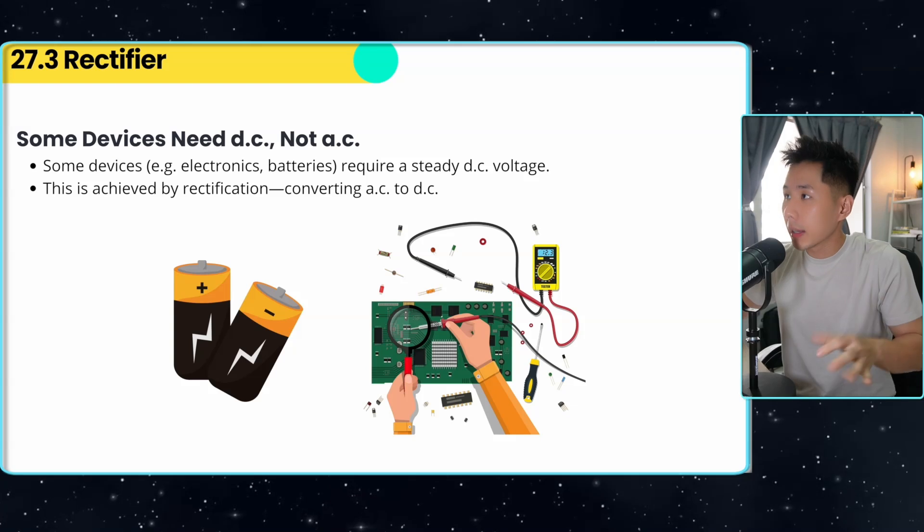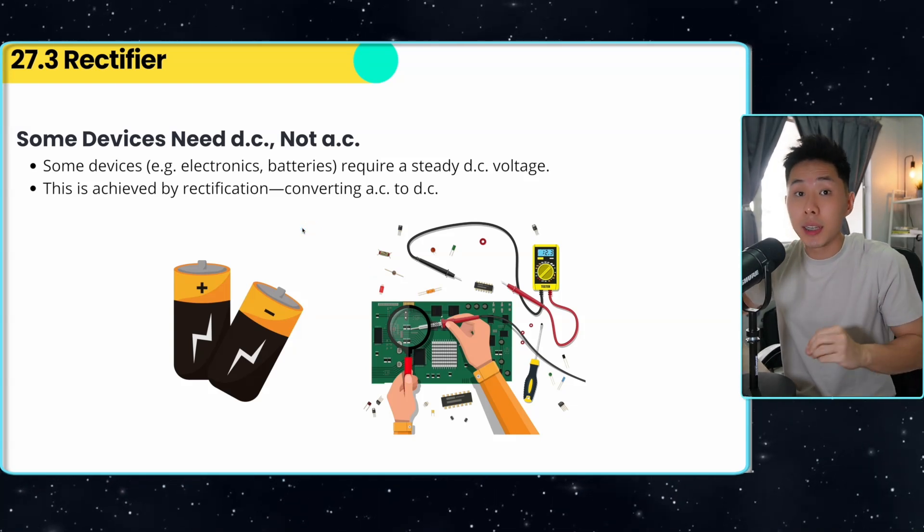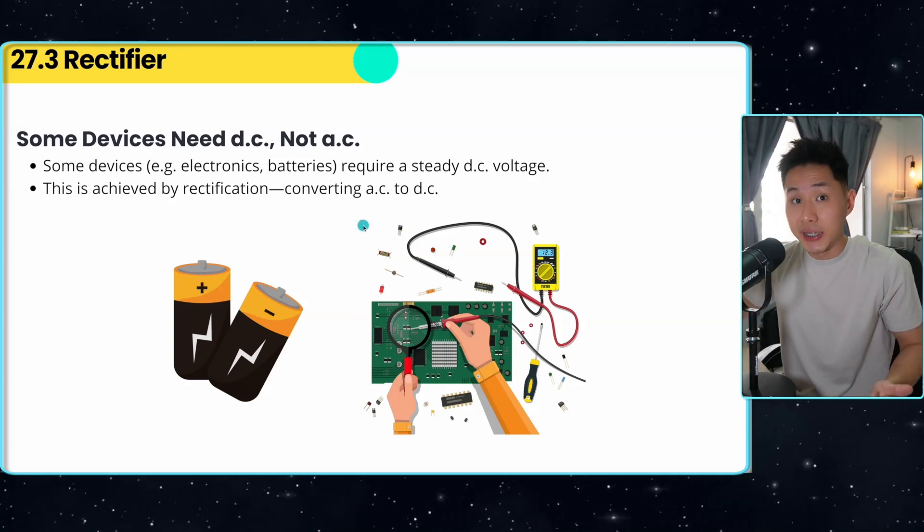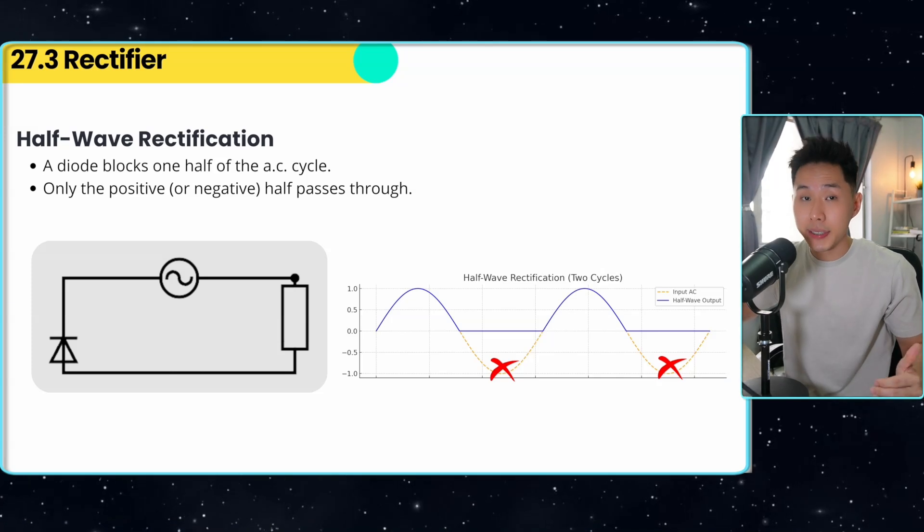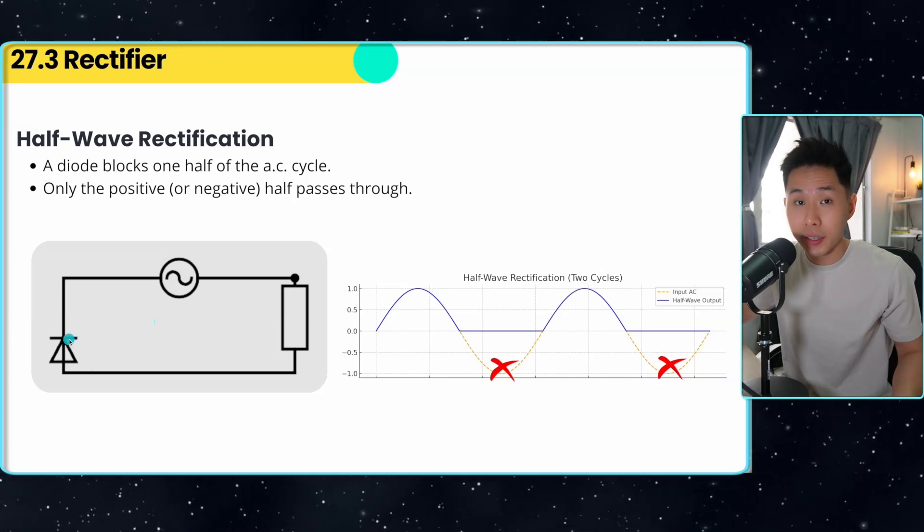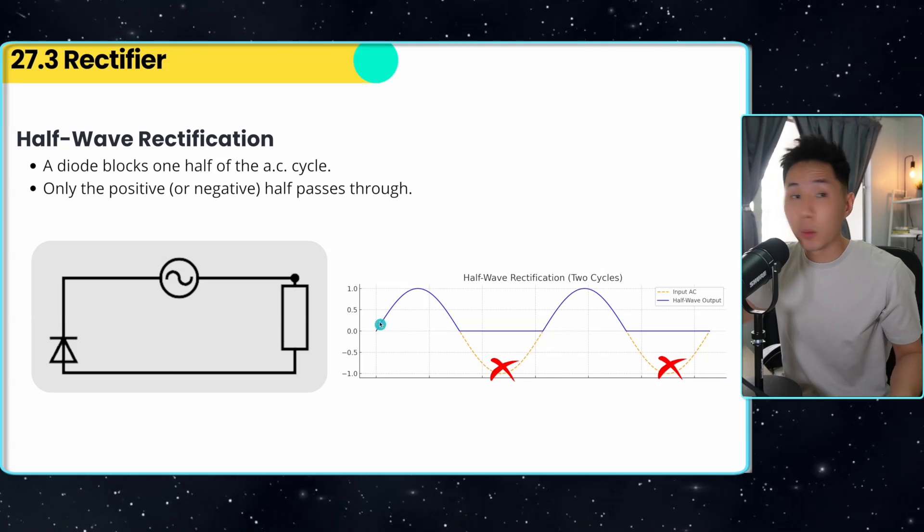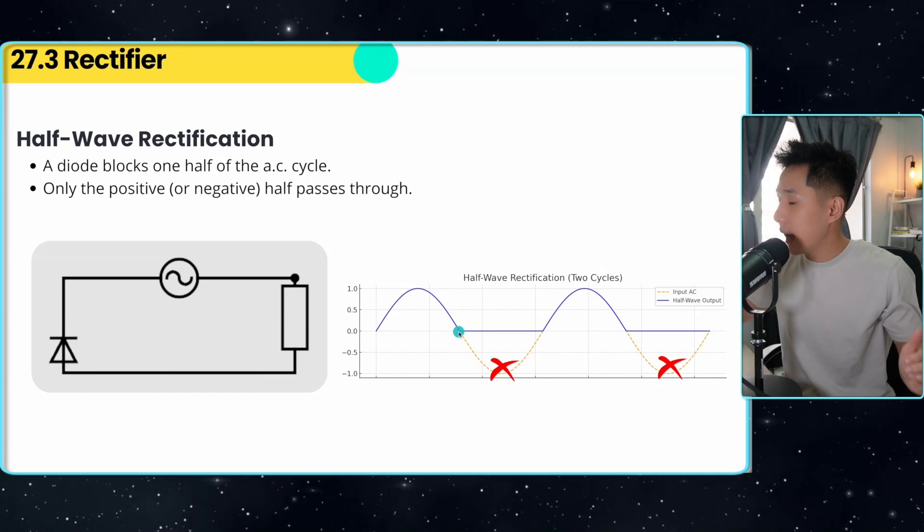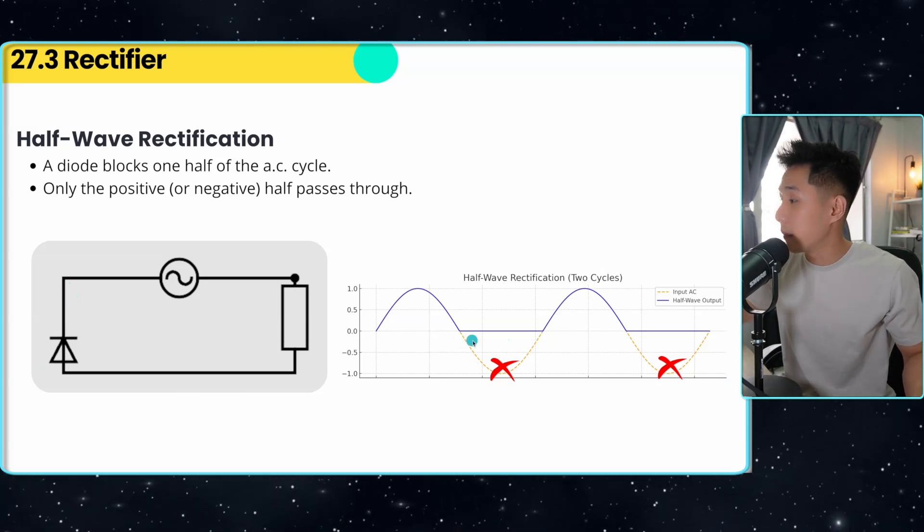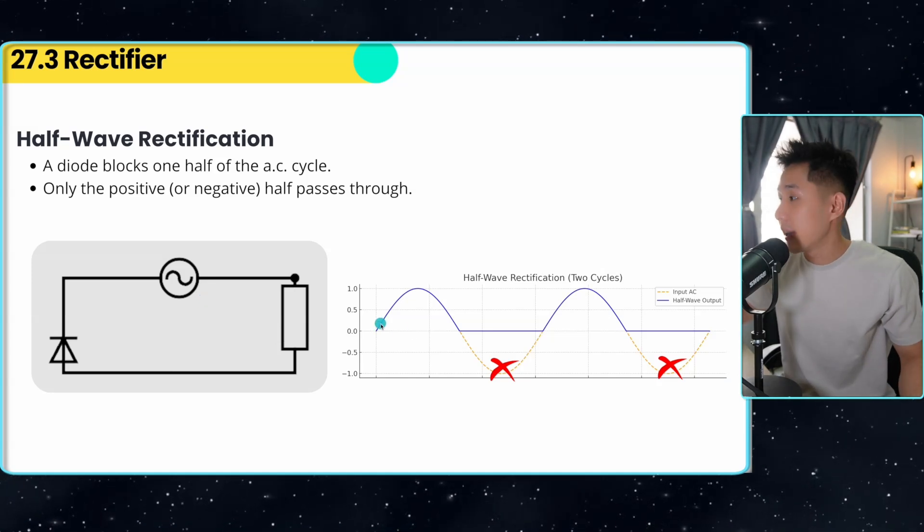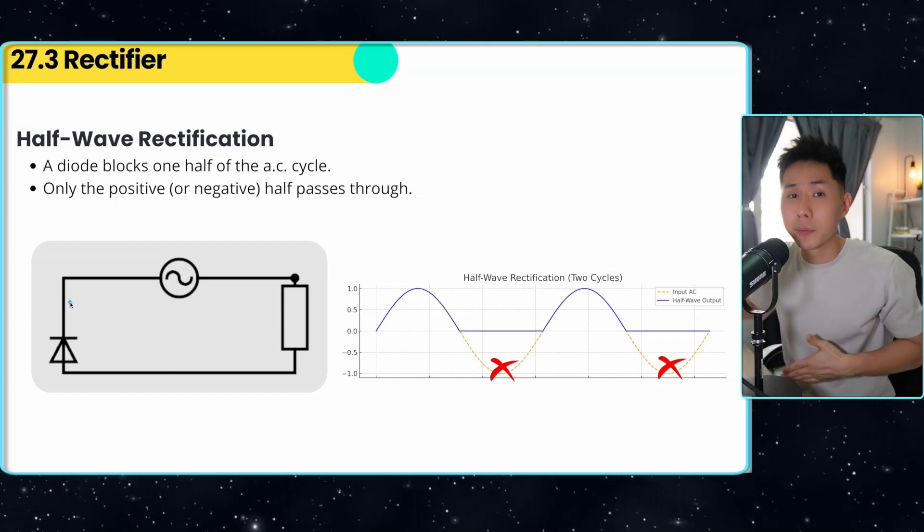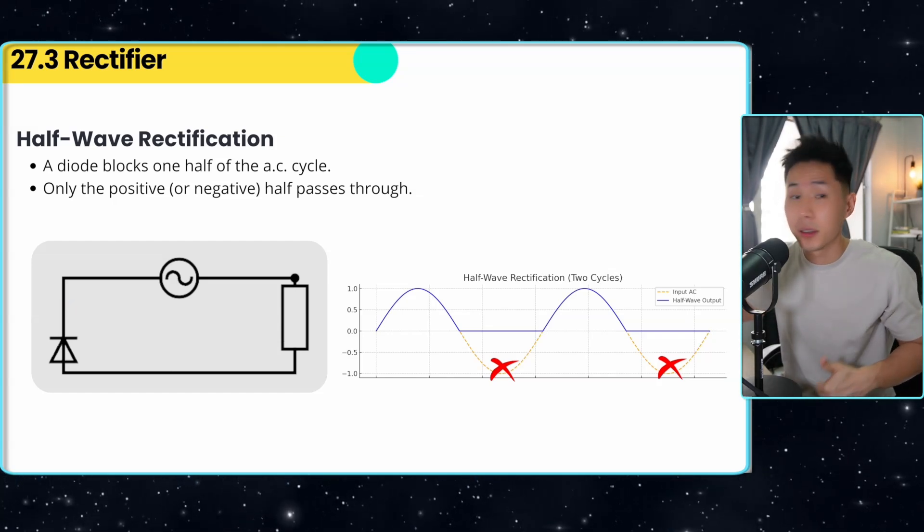Rectifier is used when you want to convert alternating current into direct current. We need to do that because there are certain devices that can only work with DC. So there are a few rectification methods. The first one is half wave rectification. What you can do is to put a diode into your circuit. And when the current is flowing in this direction, nothing will get affected. But in the other half of the cycle, the diode is going to block the current from flowing in another direction. So you can see from this graph here, when you have a half wave rectification, in the first half of the cycle, current can flow. In the other half, current cannot flow.